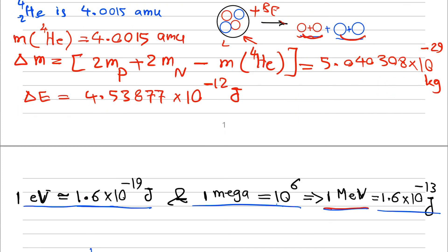The amount of energy is then 4.53877 times 10 to the power of minus 12 joules. To convert to mega electron volts: one electron volt is approximately 1.6 times 10 to the power of minus 19 joules, and one mega equals 10 to the power of 6. Therefore, one mega electron volt equals 1.6 times 10 to the power of minus 13 joules. Plugging in the values, the binding energy of helium-4 is approximately 7.983 mega electron volts.